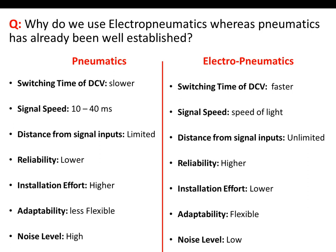First of all, the switching time of our valve in electro-pneumatics is quite faster. Secondly, the signal speed — since we are using electric current, the speed of the signal is the speed of light.